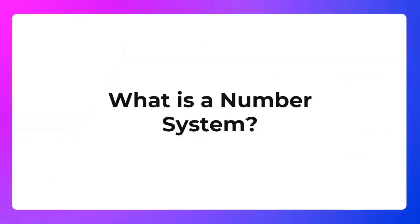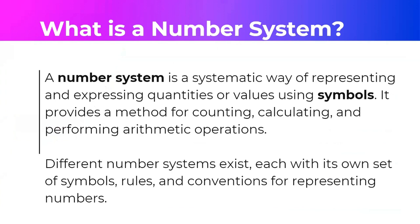So let's start — what is a number system? A number system is a systematic way of representing and expressing quantities or values using symbols. As we discuss the four number systems, we'll recognize what symbols are used for each. It provides a method for counting, calculating, and performing arithmetic operations. Different number systems exist, each with its own set of symbols, rules, and conventions for representing numbers.